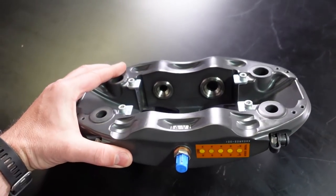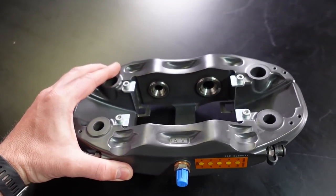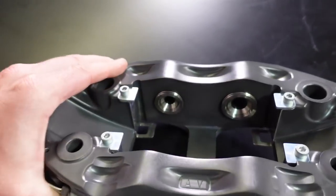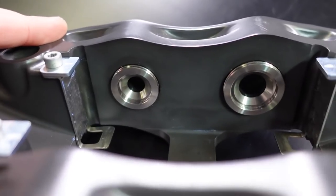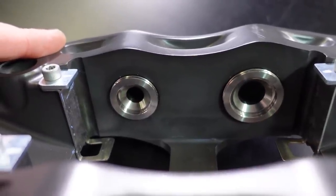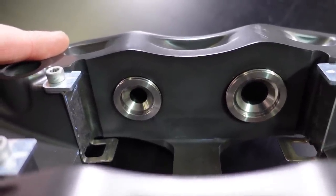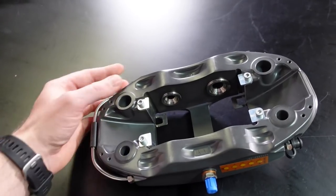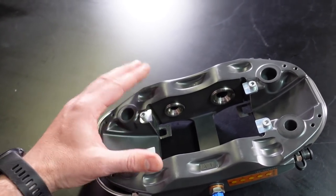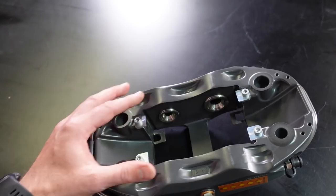One of the things that's really common on modern motorsport calipers is an offset piston size. If you look down here, it's pretty clear that there is quite a large difference in the diameter of both of those pistons. The reason we have this offset is to do with the effectiveness of the clamping on the pads and disc at the leading edge versus the trailing edge.